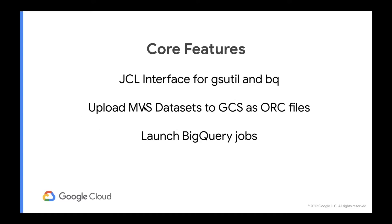The goal of this part is to be able to upload datasets pretty easily — you just have to provide a copy book along with it. Once that data is copied over and converted into a file format that BigQuery can load, it also gives you a mechanism to launch BigQuery jobs. For example, if you have a dataset exported from DB2, you run a command using this tool to upload it. It reads the schema from your copy book and converts the data to an ORC file. Then you submit a series of SQL statements that will transform or merge it into your other tables that you expose to end users.